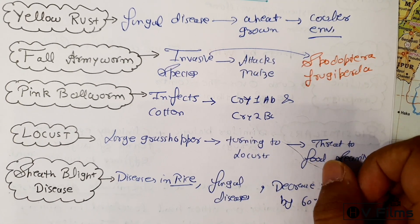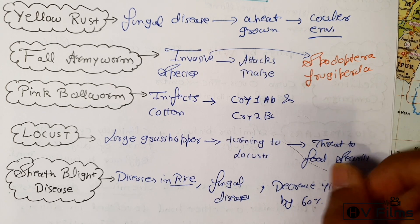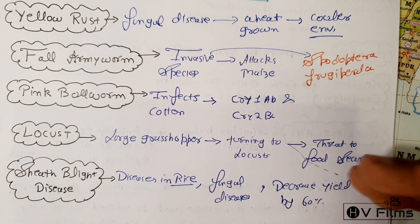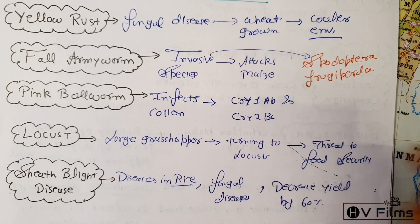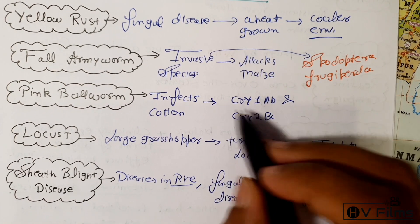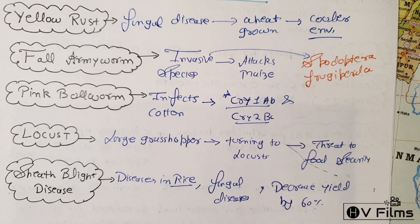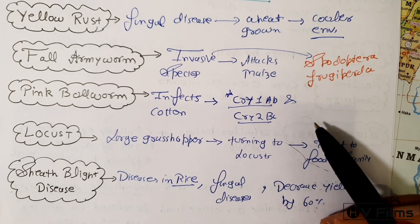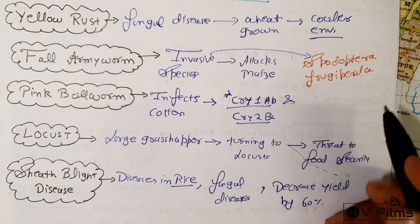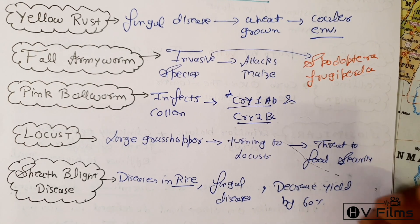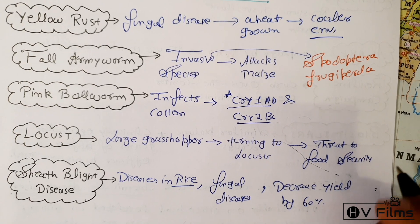The next disease is the pink bollworm, which infects cotton. The BT cotton grown in India is genetically modified to develop resistance to the pink bollworm pest. This is done by inserting the genes Cry1Ac and Cry2Bc into the cotton, derived from the soil bacterium Bacillus thuringiensis.